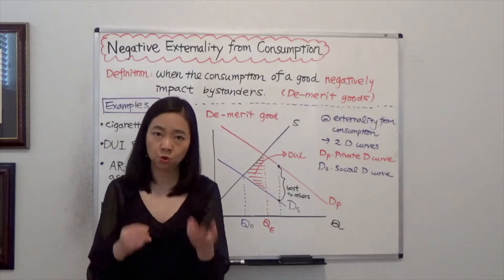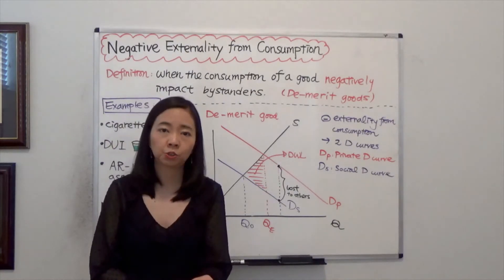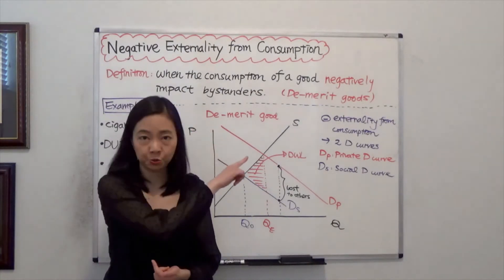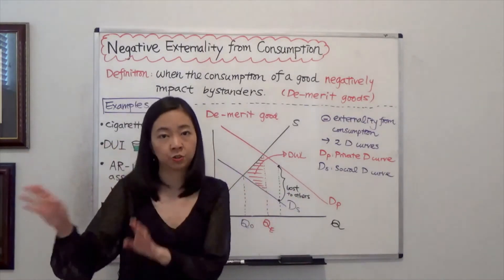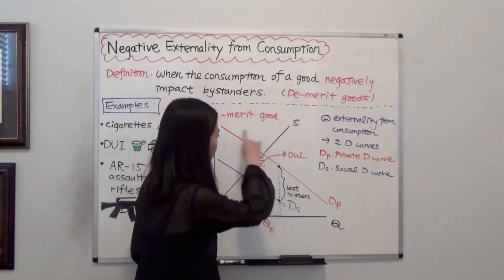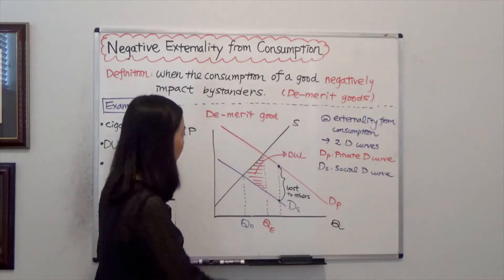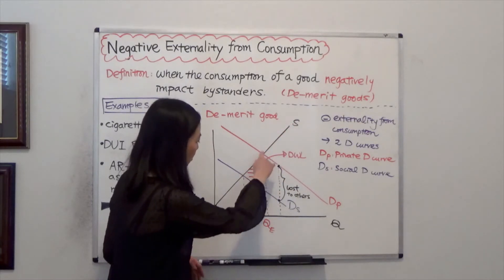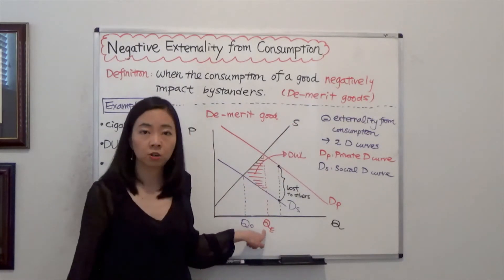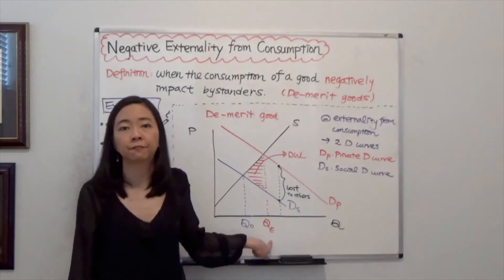Now, when the consumer is deciding how much of this demerit good to consume, they will look at their private demand curve because they do not consider the cost to others. So you can see the intersection of the private demand curve and the supply curve. That will be the equilibrium quantity. We call that QE. E stands for equilibrium.